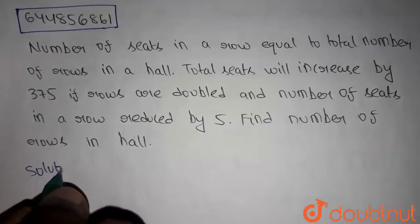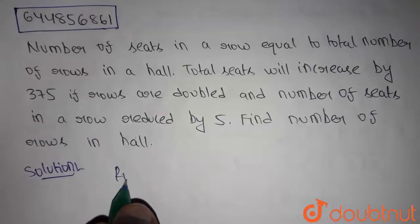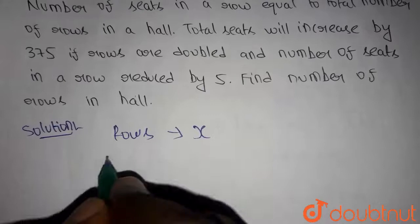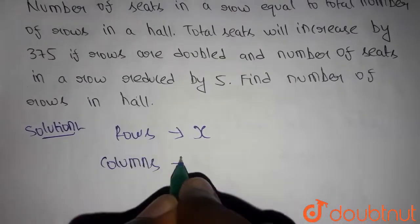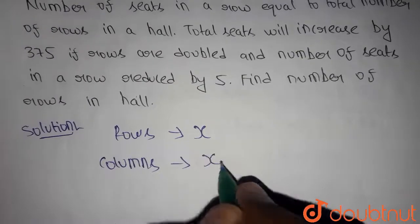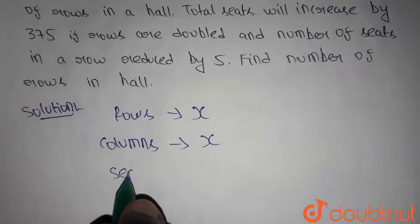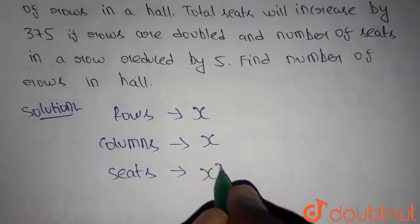Let's get into the solution. Let's assume number of rows as x. Then seats in each row, which is nothing but columns, in each row is also x. Since it is given seats are equal to rows, so the number of total seats initially becomes rows into columns which is x squared.